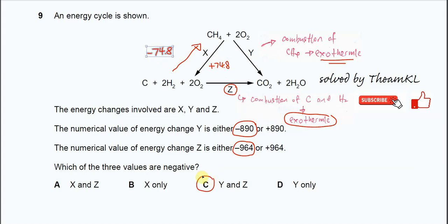Answer confirmed is C. You don't need to really bother with X, which is positive or negative, because we are quite sure Y and Z are exothermic. Answer confirmed is C. That's all, thank you.